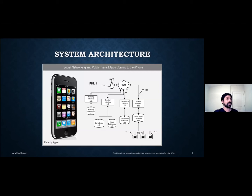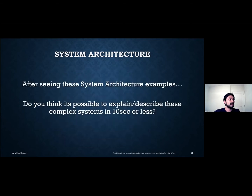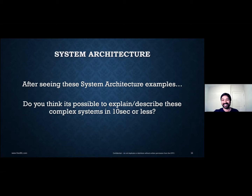Here's another architecture diagram — a transport or networking layer on the iPhone. And here's the Tesla Model 3 mechanical design. Question: after seeing these system architecture examples, do you think it's possible to explain or describe these complex systems in 10 seconds or less? Type yes or no in the chat. Obviously this is a trap. Only a super technical person can — that's an interesting thought. But I'm going to give you a very easy way to do it, and every one of you will be able to do it right after this.